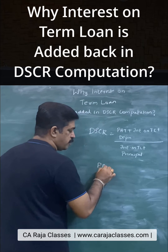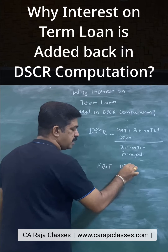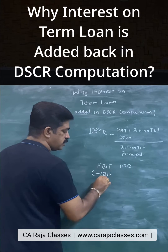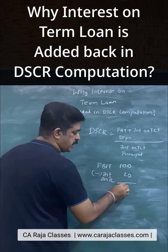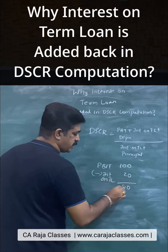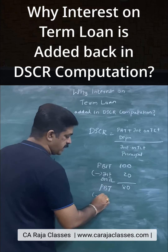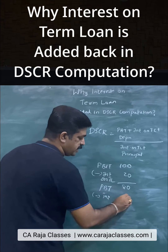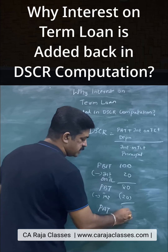Let us assume your profit before interest and taxes is 100. You pay interest on term loan of 20, so you get profit before tax of 80. Let us say your taxes are 20, so you get profit after tax of 60.